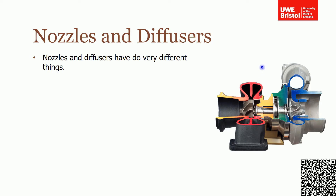This turbocharger is a device fitted to an internal combustion engine. The aim is to boost the air pressure going into the engine to get more power. Flow goes from right to left — air comes into the compressor side, is accelerated up to high speed, enters the intake manifold, is compressed, its pressure increases, and you get a higher mass of air in the engine, giving more power.